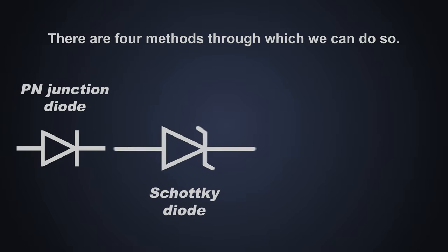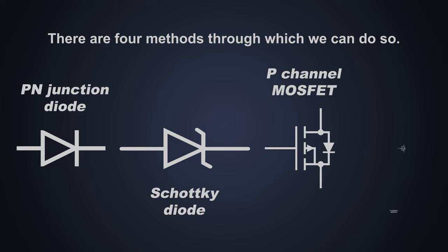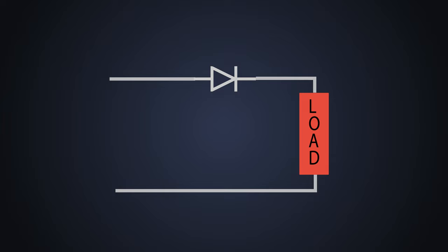There are four methods through which we can do so: PN junction diode, Schottky diode, N channel MOSFET and P channel MOSFET. We use these components in series with the circuit, so the whole circuit current flows through these components. The main loss in the application is due to the conduction only. Now we can segregate which component to use for our application.